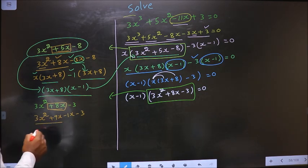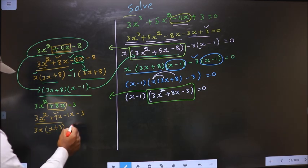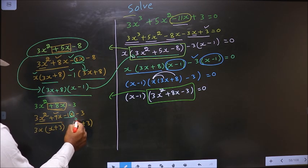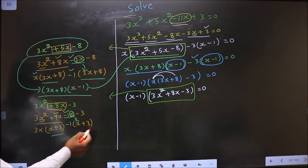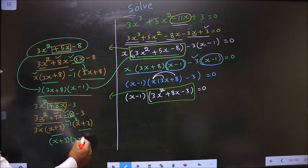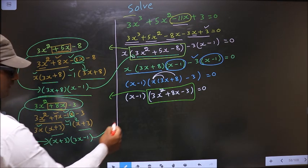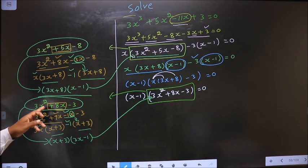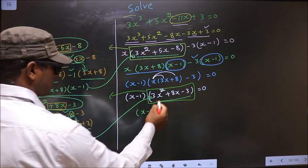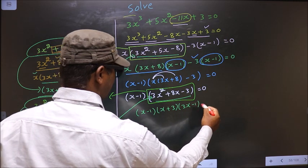What can be taken as common from these two terms is 3x, so here we get x and here we get plus 3. Whatever we have got here, here also we should get the same thing. Now from this, x has gone inside, so outside you are left with minus 1. Now you take out x plus 3 common, so here you have 3x and here you have minus 1. In place of this quadratic you replace this over here — that is x minus 1 times x plus 3 times 3x minus 1, equal to 0.